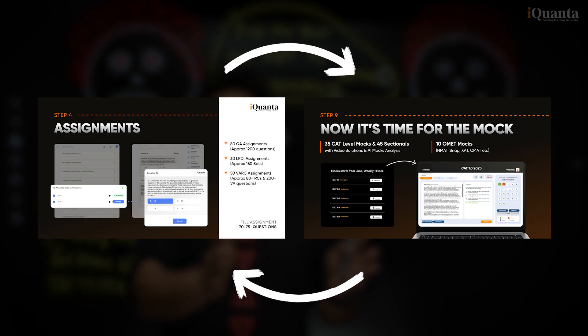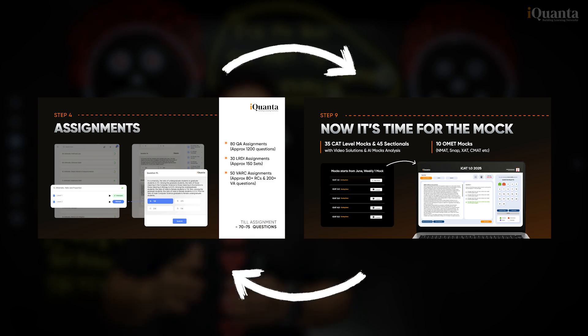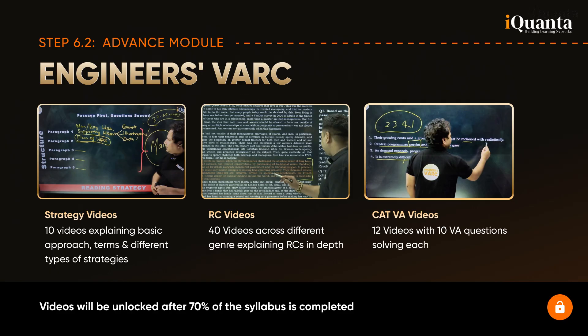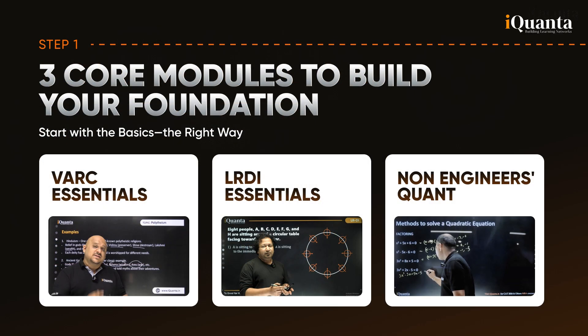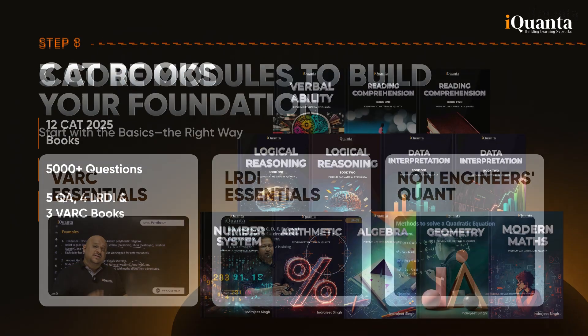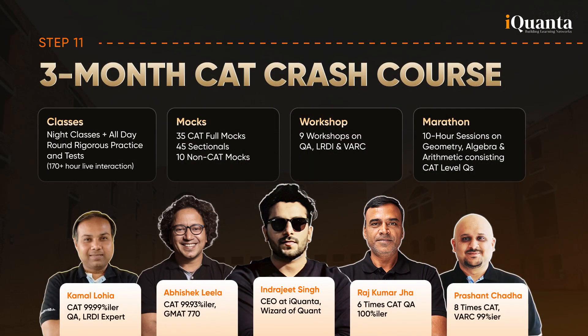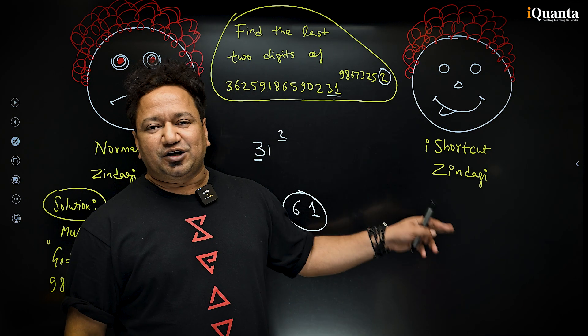which are 35 in numbers, total mocks, full-length mocks, and 45 sectionals. And in addition to the engineers VRC module, non-engineers QA module, LRDI inception module, VRC essentials, LRDI essentials, hardcopy books, IMABC module, crash course, and so many things. We are also coming up with iShortcut.